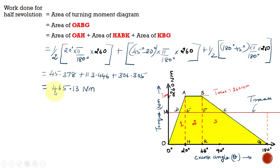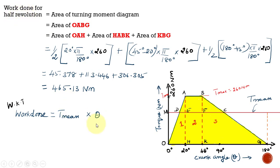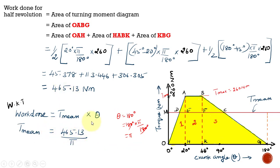This 465.13 Newton meters is the work done during half a revolution. Using the formula: work done = T_mean × θ, where θ for a half revolution is 180° = π radians. So T_mean = 465.13 / π = 148.05 Newton meters. We have now calculated the mean torque value as 148.05 Newton meters.